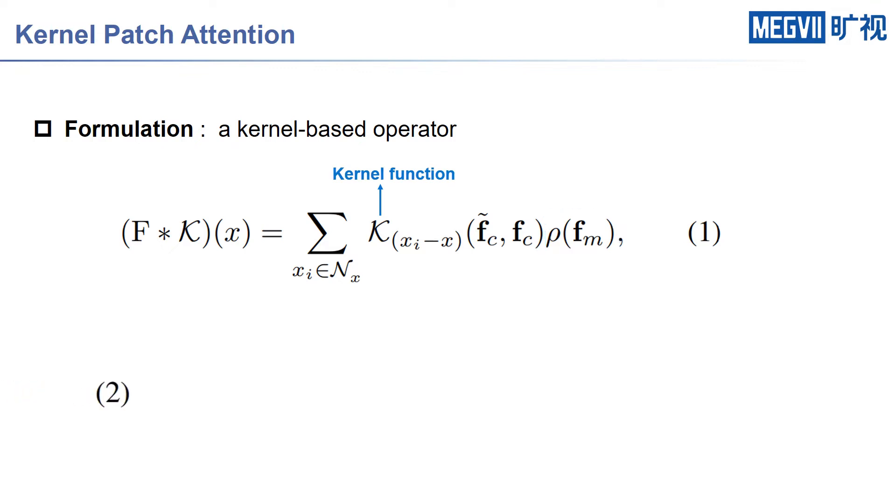The kernel function is the core component in our KPA, as given in equation 2, where S stands for a scale operator, which produces a scale map based on the Euclidean distance between each point to the center one within the kernel window. The weight function W is used to produce the kernel matrix.